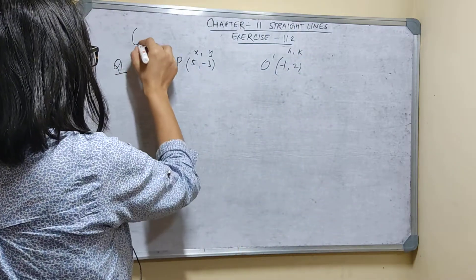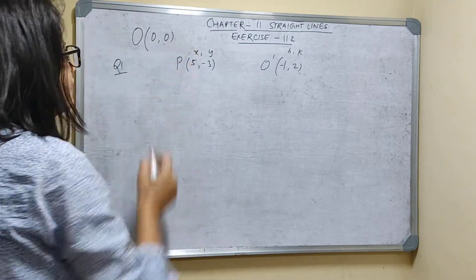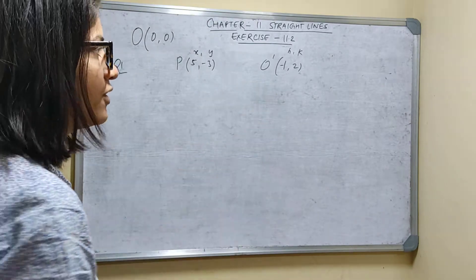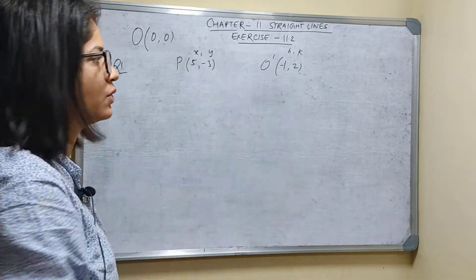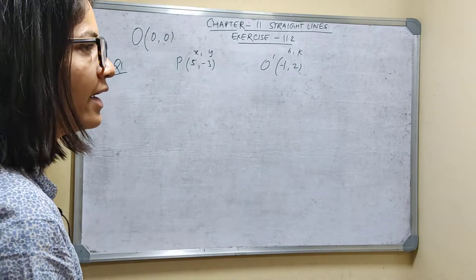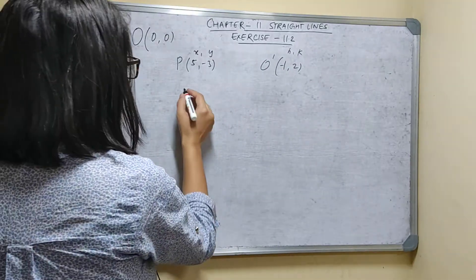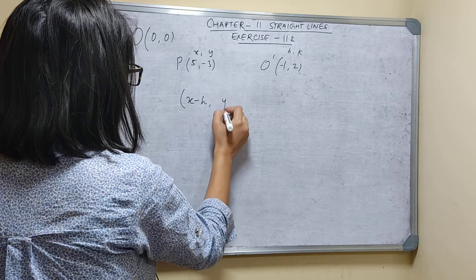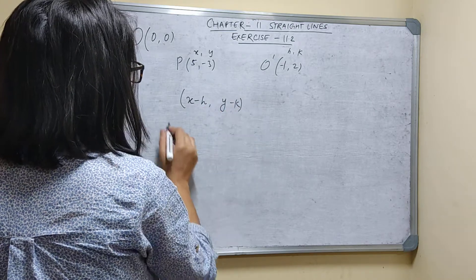The old origin was O at (0, 0). Now shifting to the new origin, that is O' = (-1, 2). These are H and K coordinates. So the new coordinates will be given by the formula: X minus H, Y minus K.